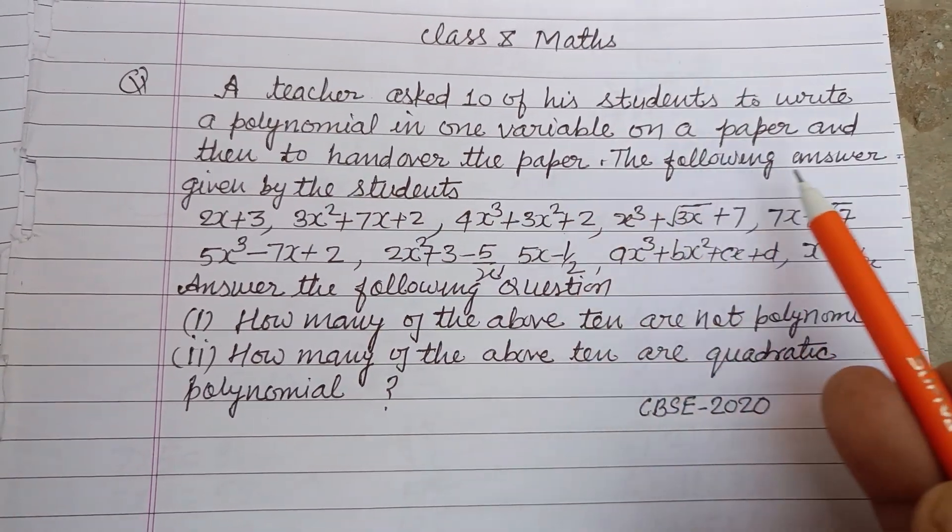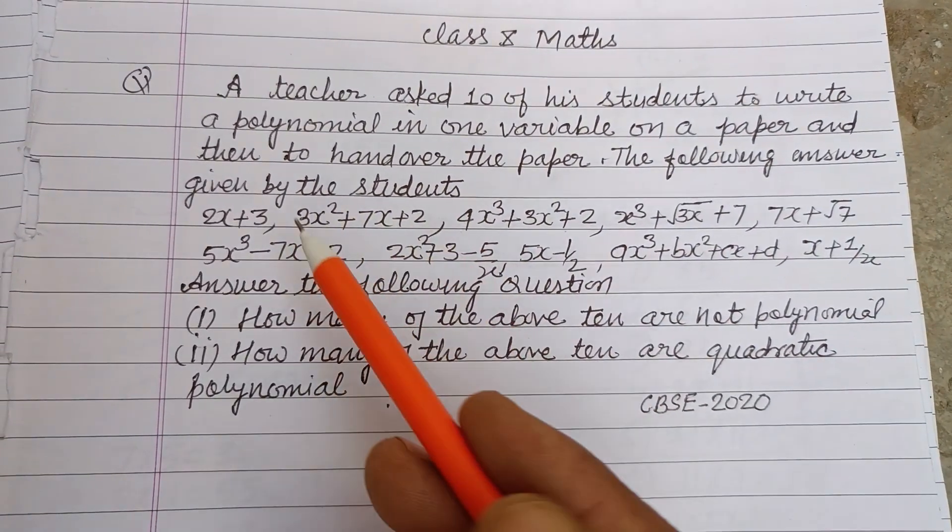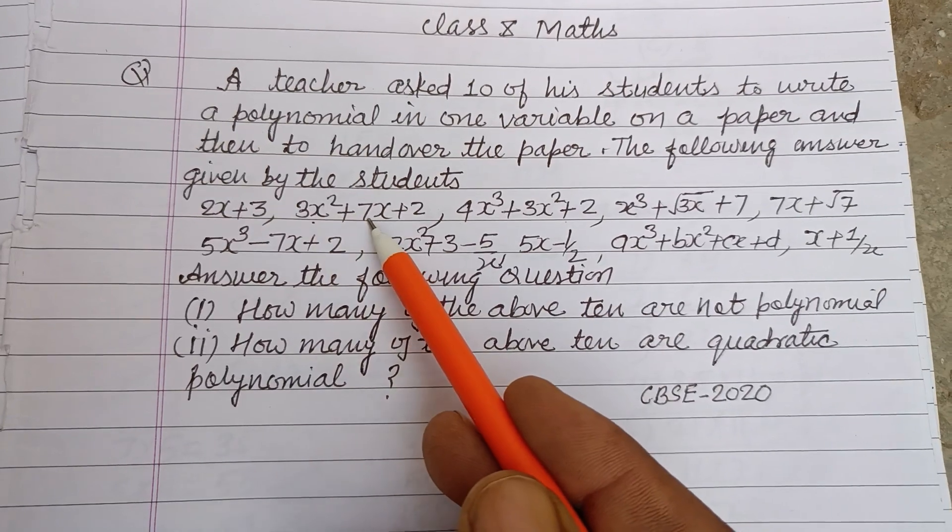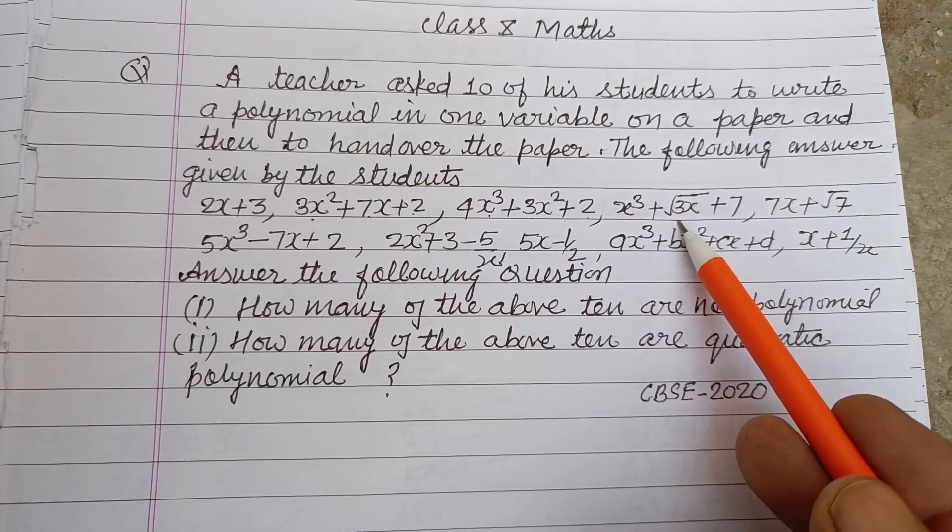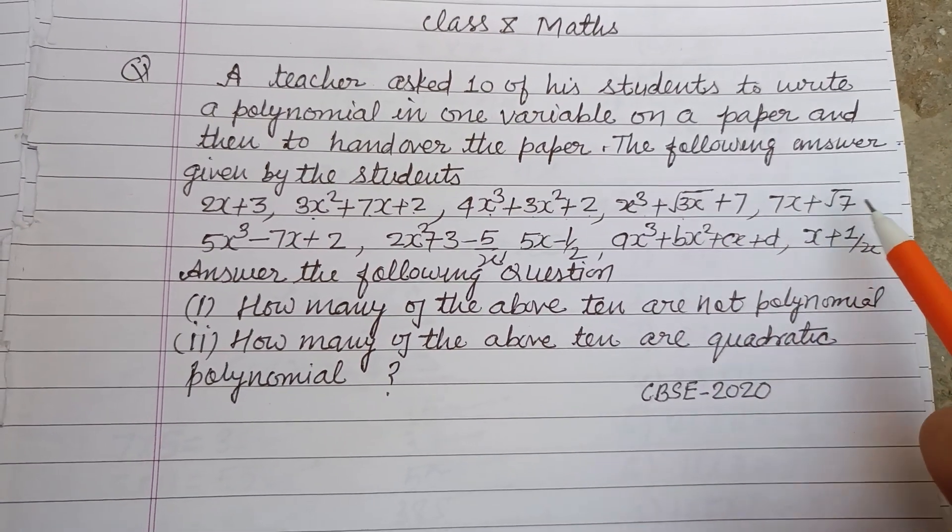The following answers were given by the students: 2x + 3, 2x² + 7x + 2, 4x³ + 3x² + 2, x³ + 100√3x + 7, 7x + √7.